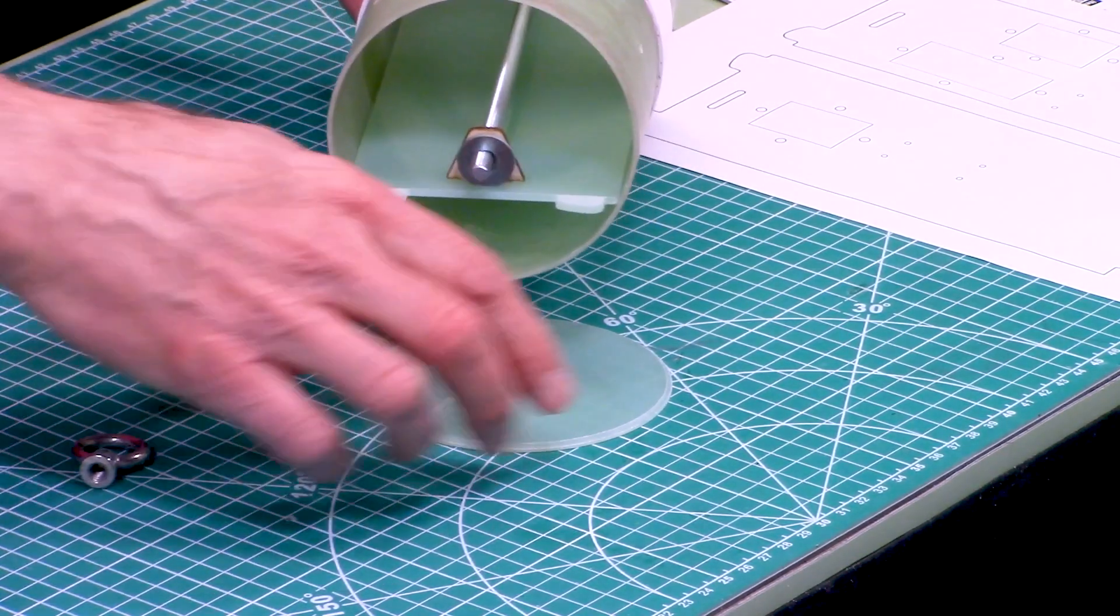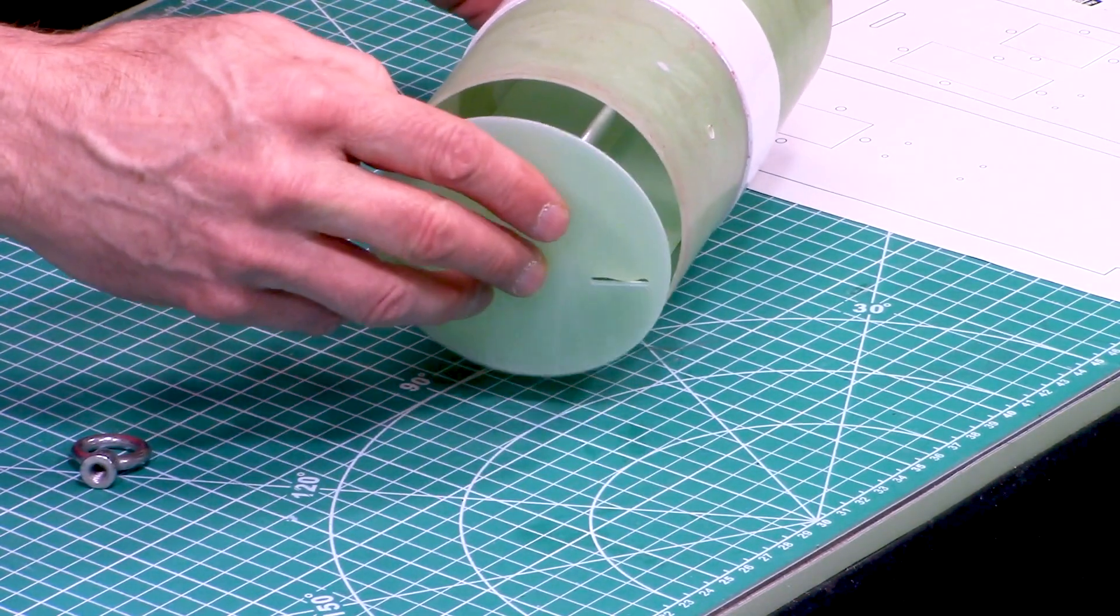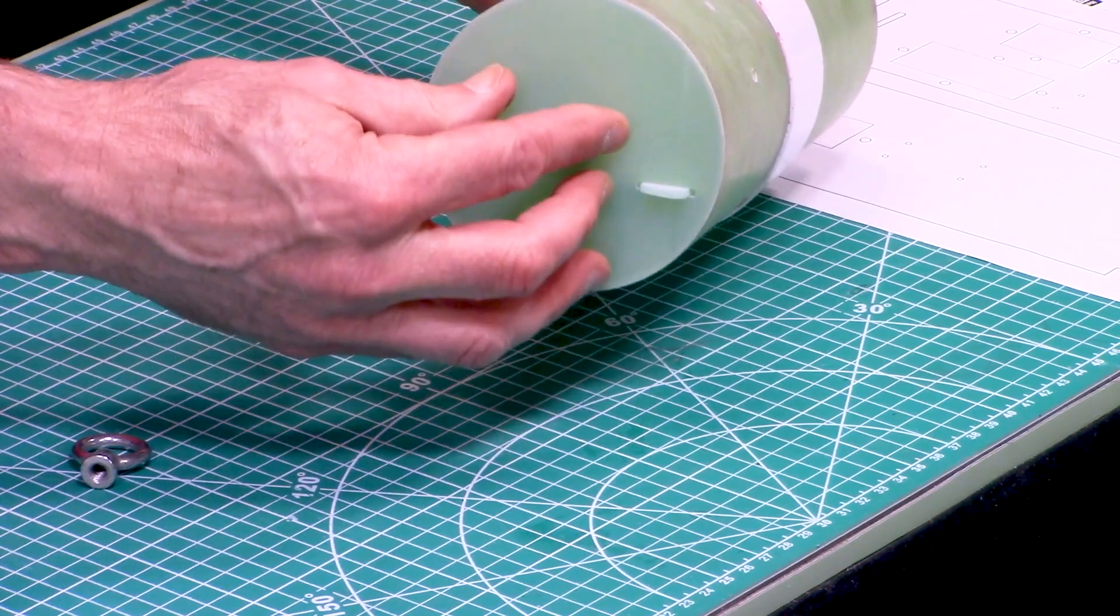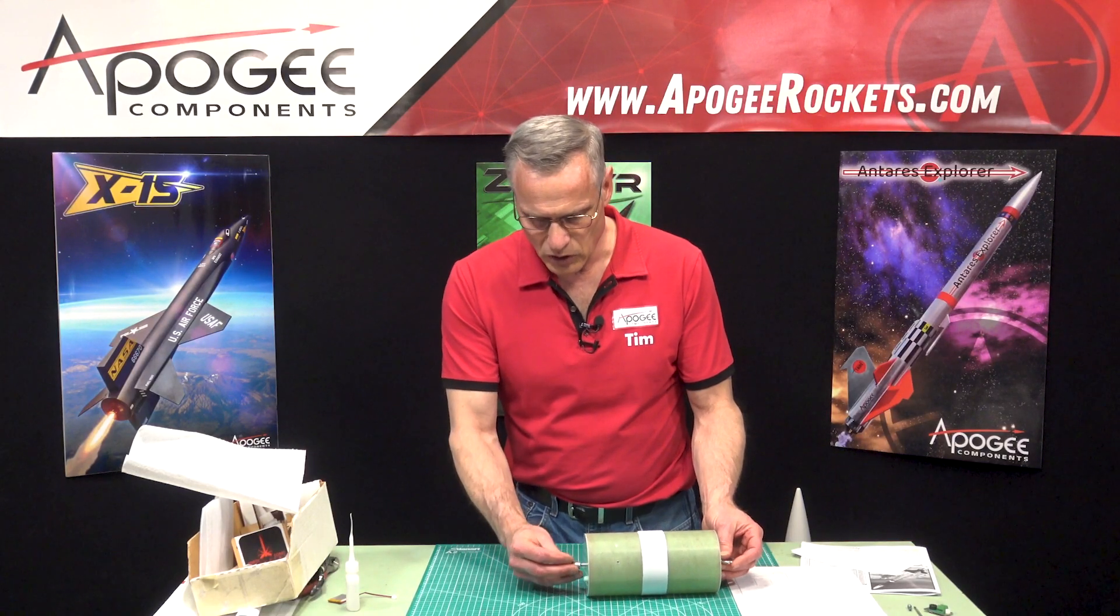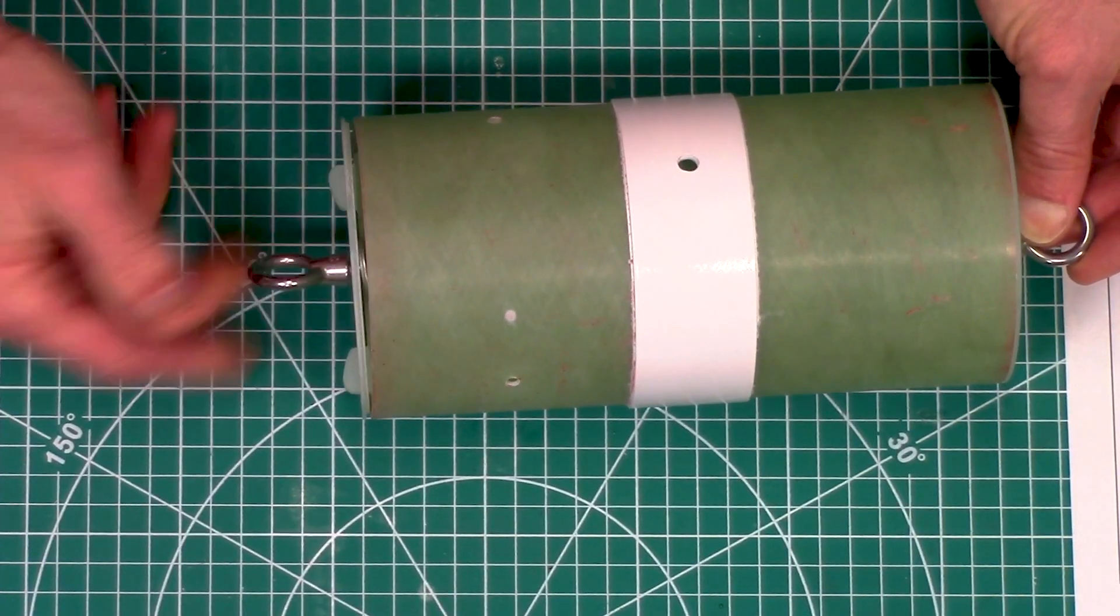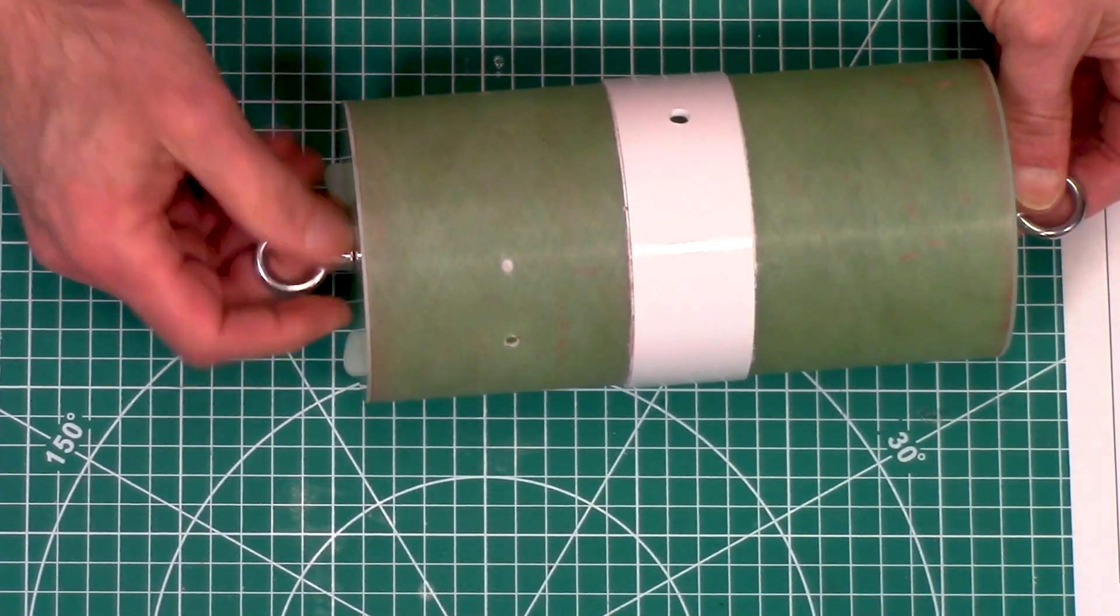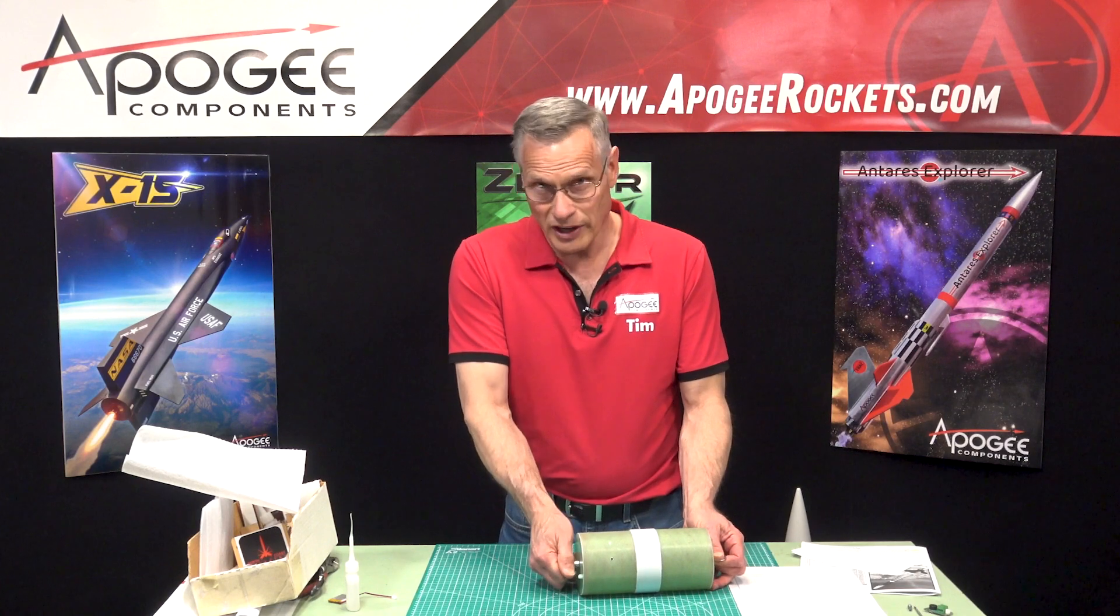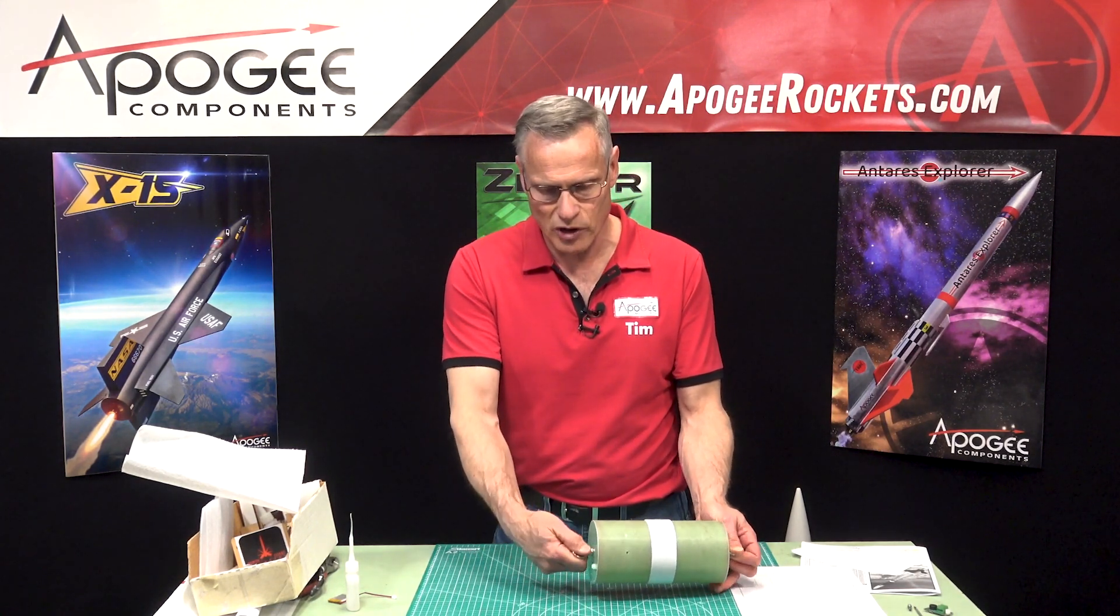You can see what this piece right here does—it prevents that all-thread from flopping around because you got to get that into the hole as well as the little tabs through there like that. And then we can screw it down real tight. When you're out in the field, you don't have to have any tool to open this up.